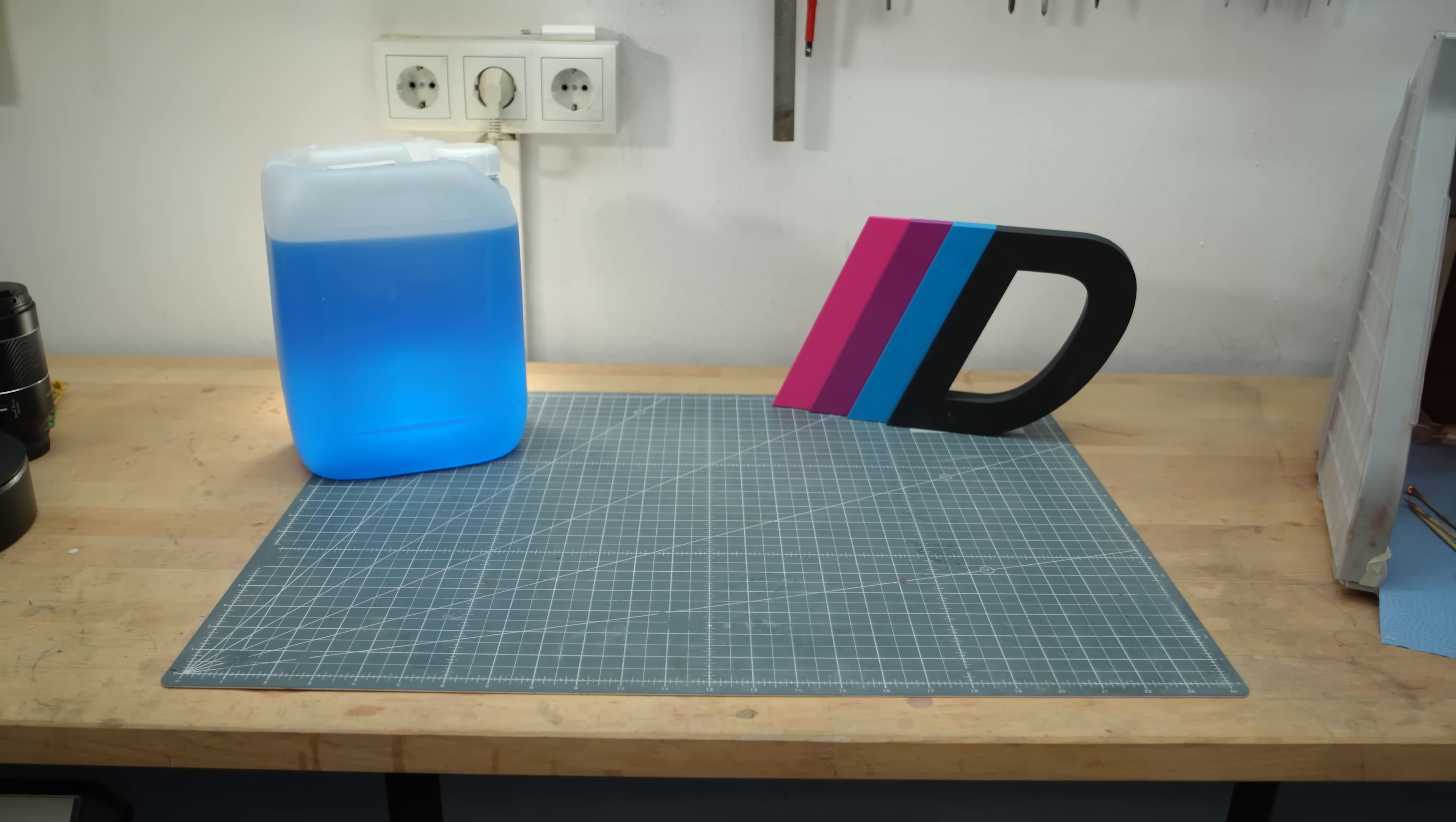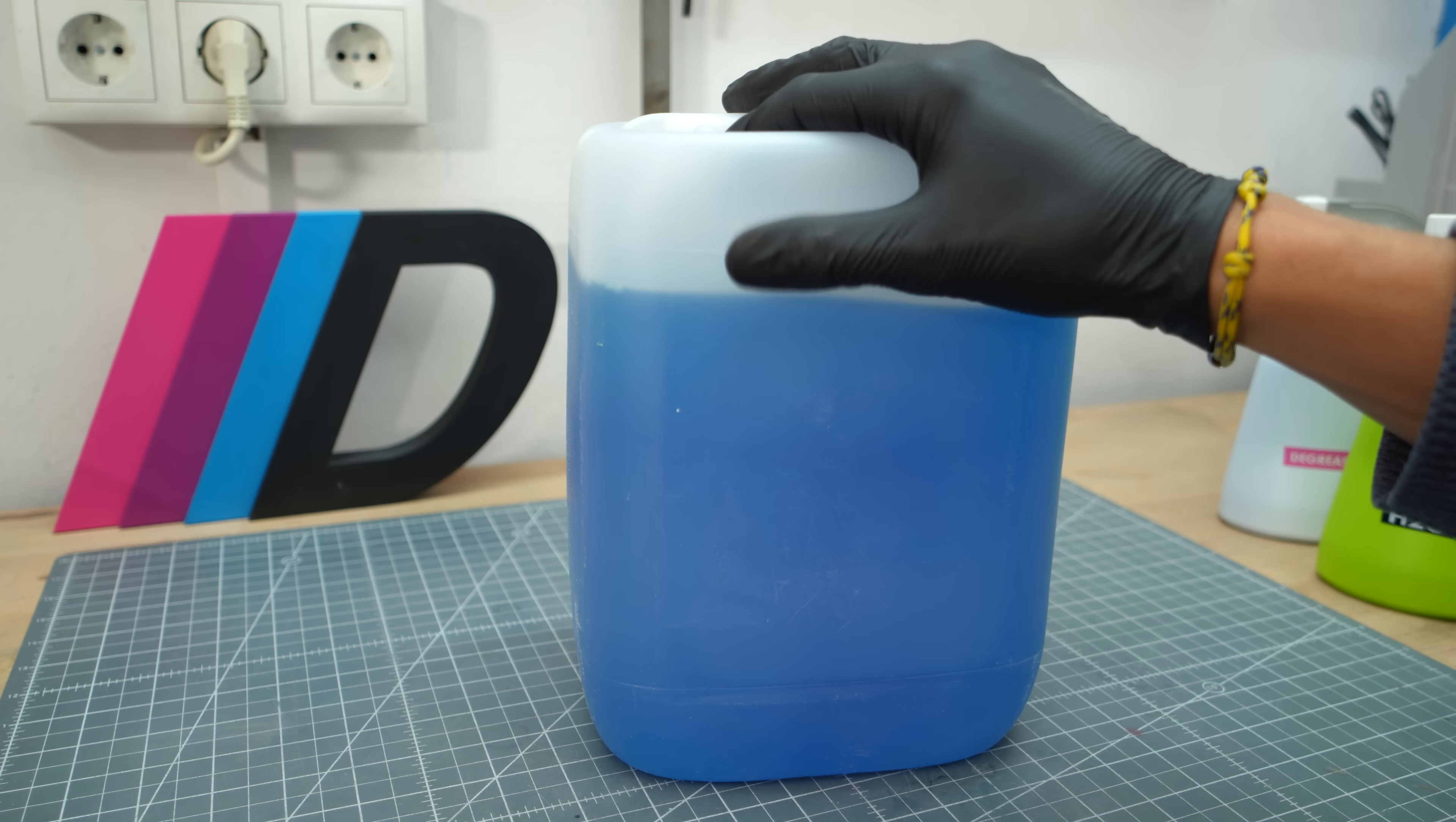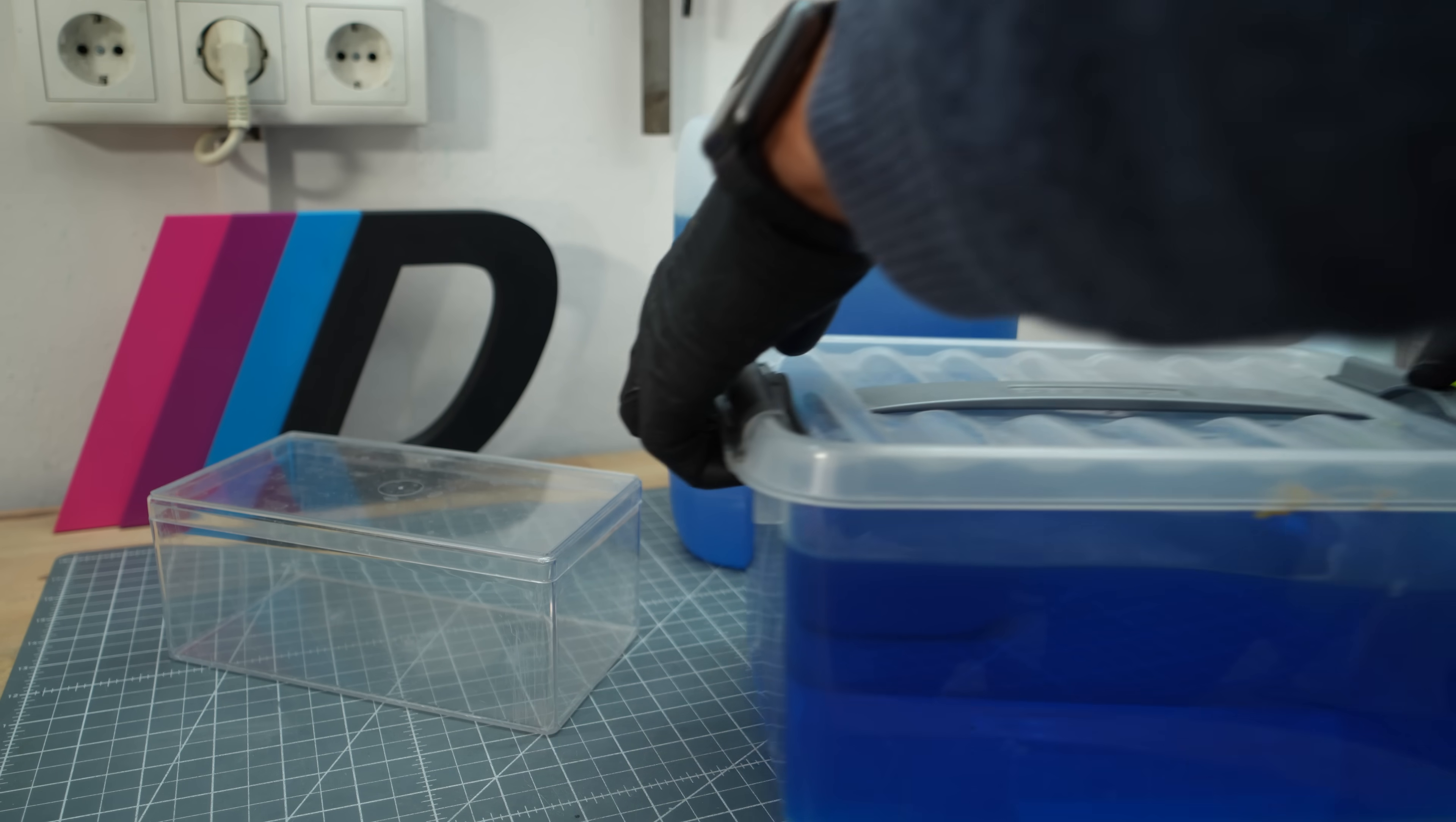For electroplating, I need the following items and I'll go over each one in detail. Let's start with the electrolytes. Here I have 5 liters of acidic bright copper electrolyte with a pH of around 1. I've been using it for years and it regenerates and is well maintained. You'll need a container such as a 1 liter or even better, a 4 liter vat.